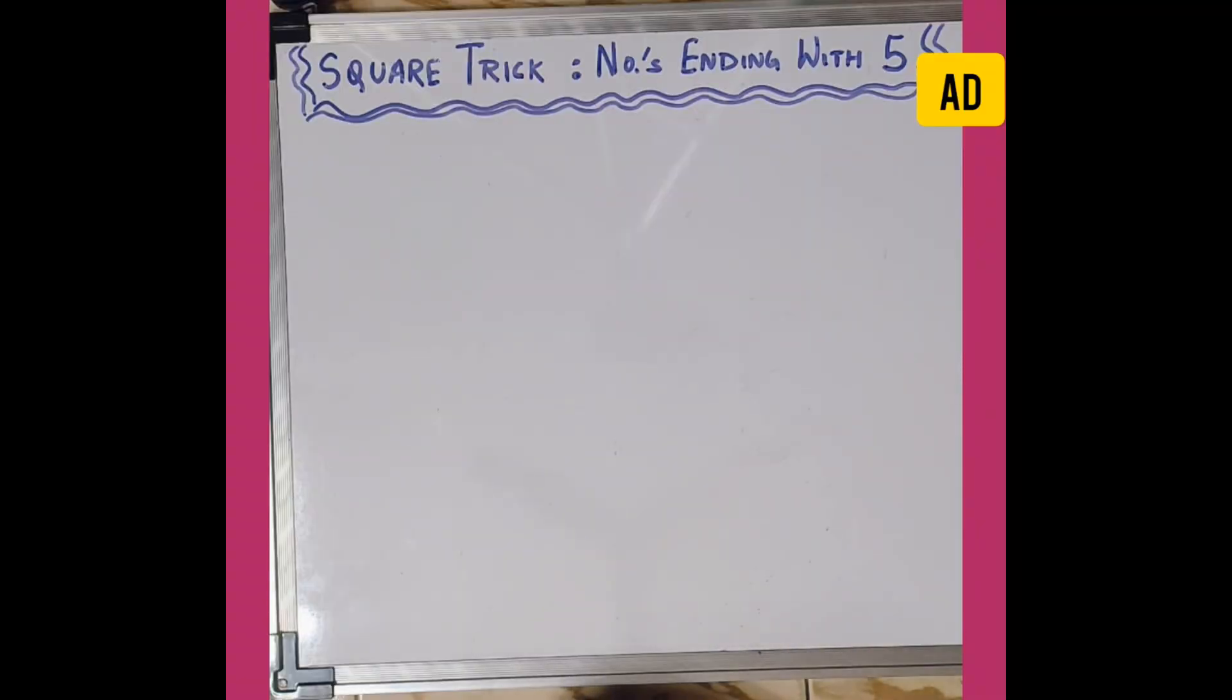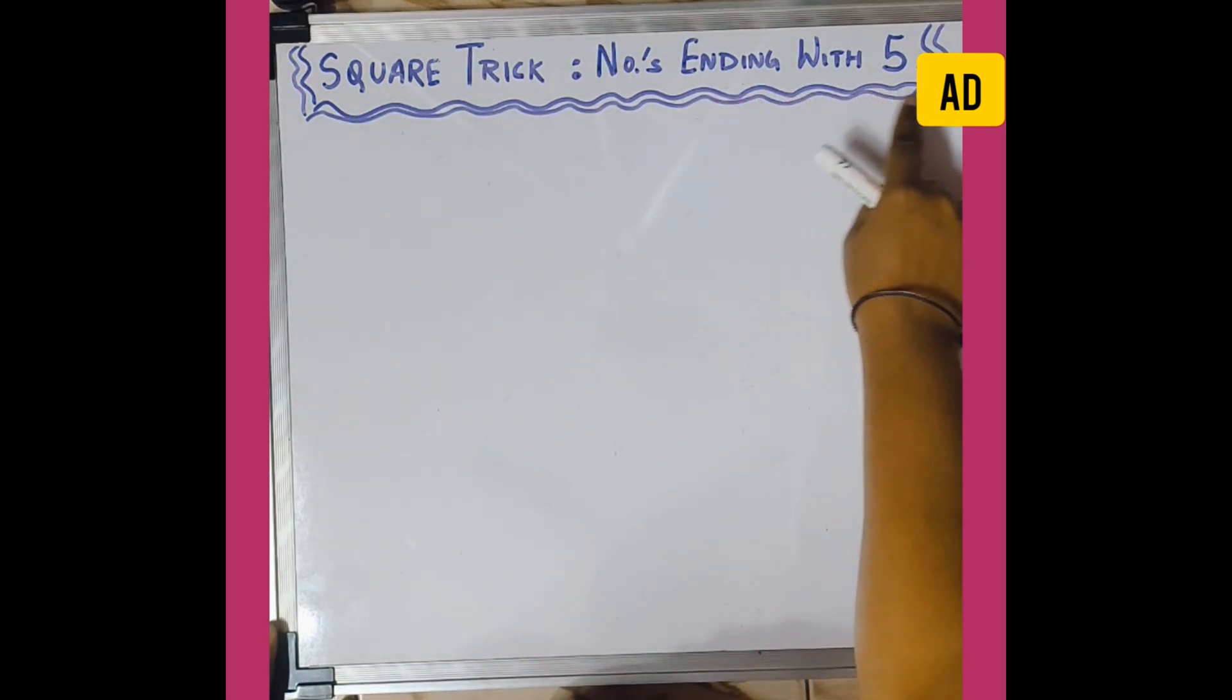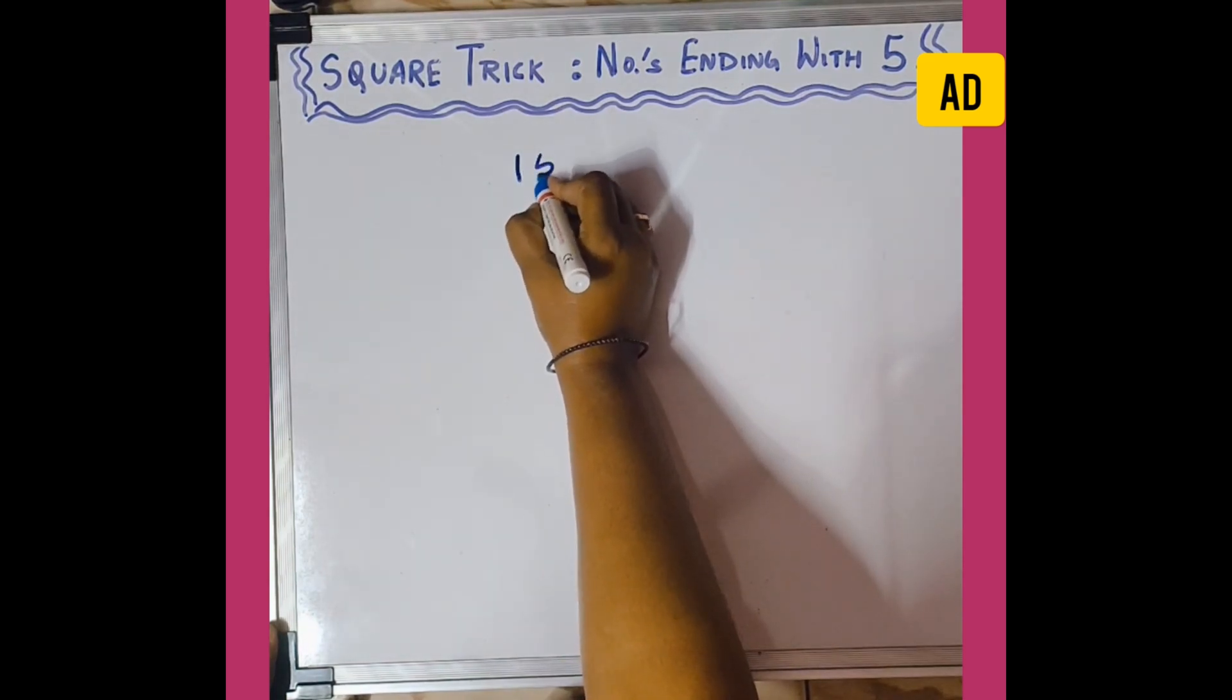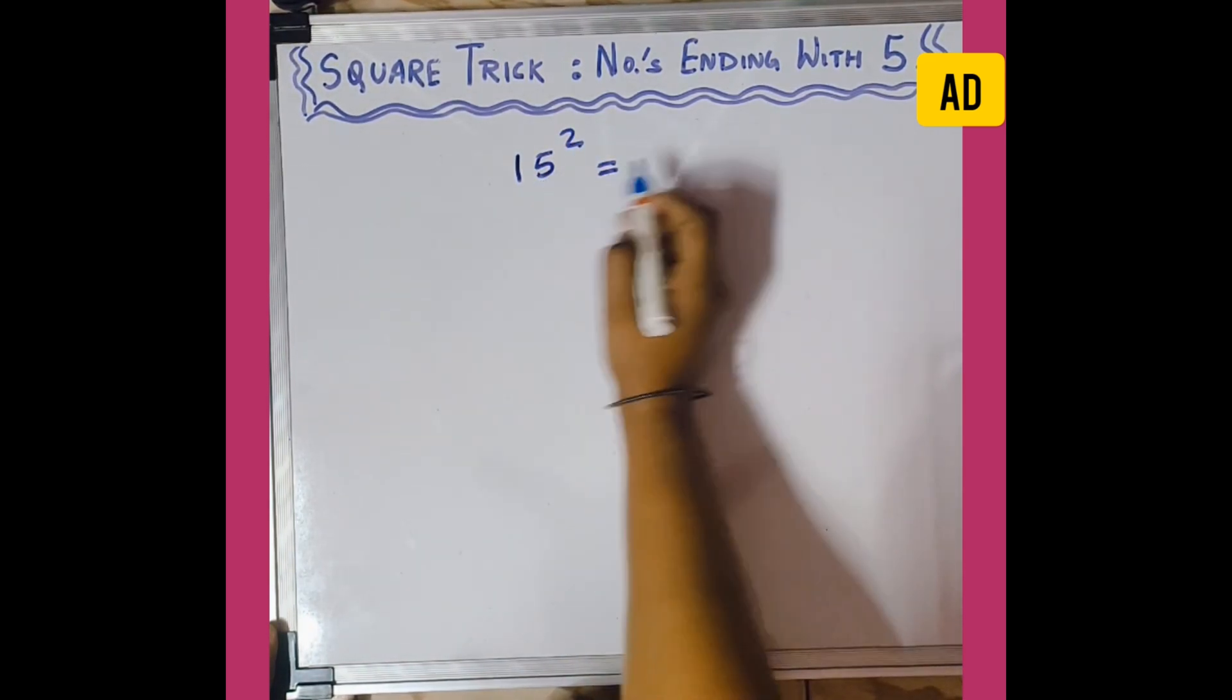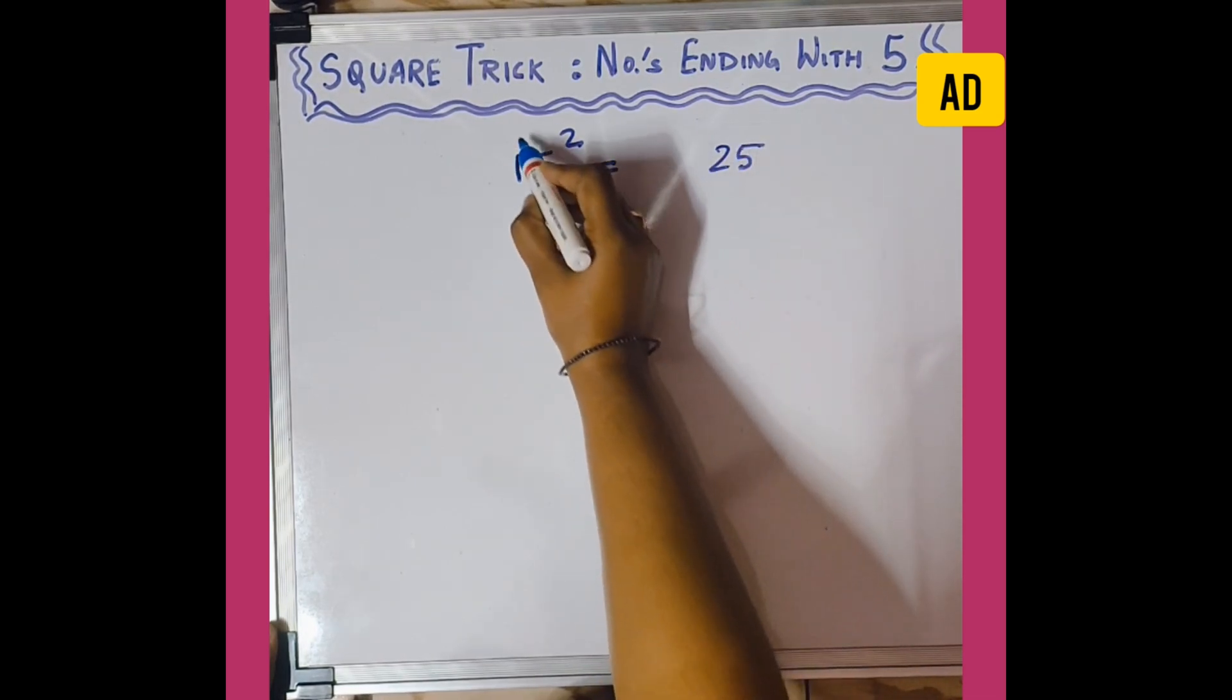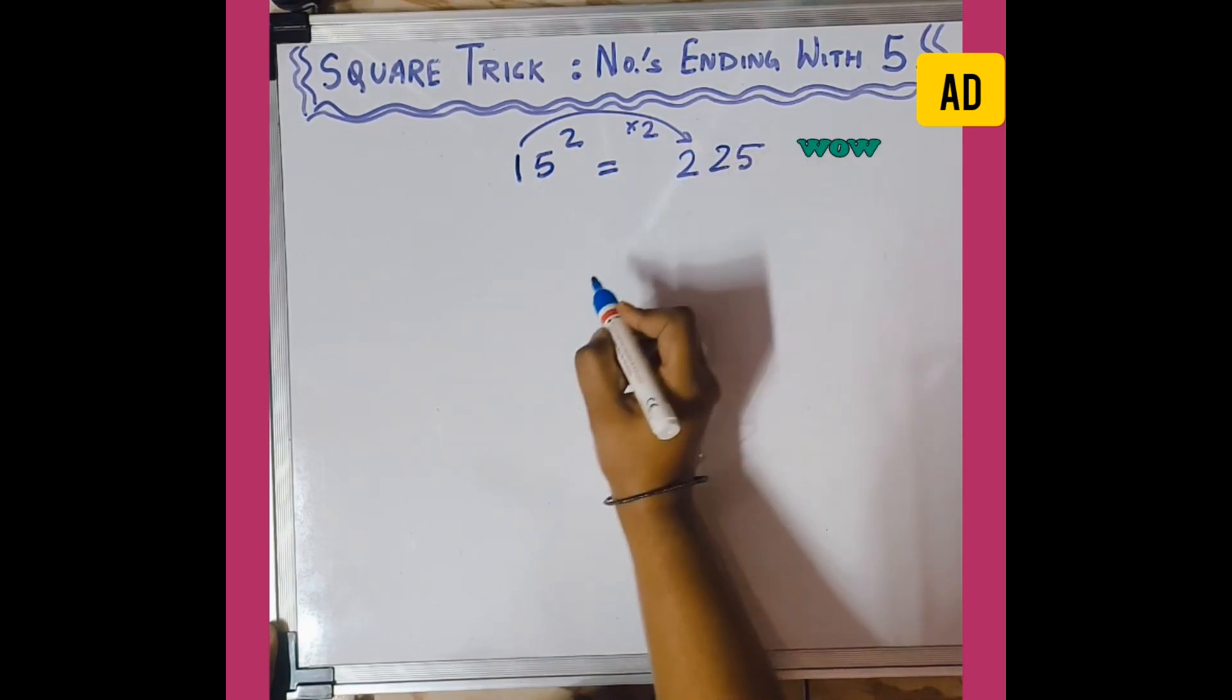Hello friends, let's begin with a square trick for numbers ending with 5. Let's start with 15 squared. See the ones digit number is 5, so 5 squared will be 25. Now the consecutive next number of 1 is 2, so 1 into 2 is 2, giving us the answer 225.